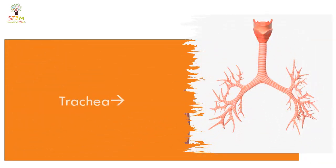The trachea is a tube supported with incomplete cartilaginous rings. The function of these rings is to keep the trachea open all the time.